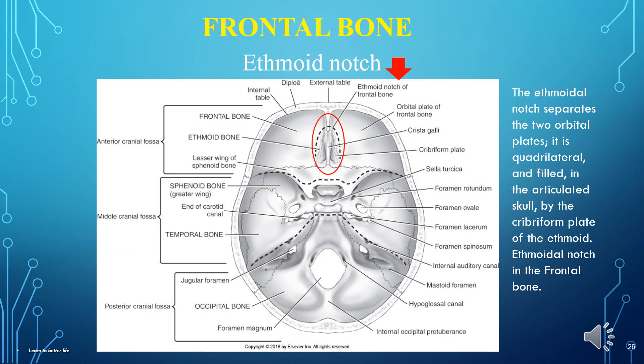The ethmoidal notch separates the two orbital plates. It is quadrilateral and, in the articulated skull, is filled by the cribriform plate of the ethmoid — the ethmoidal notch in the frontal bone.